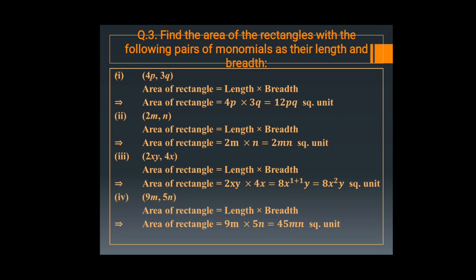In the fourth question, sides are 9m and 5n. Area of rectangle equals 9m into 5n equals 45mn square units.